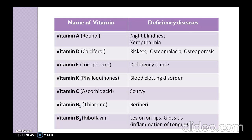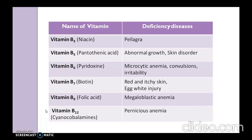Vitamin B2, known as riboflavin, causes lesions on the lips and glossitis — glossitis being inflammation of the tongue. Vitamin B3, known as niacin, produces pellagra, which is characterized by dermatitis.